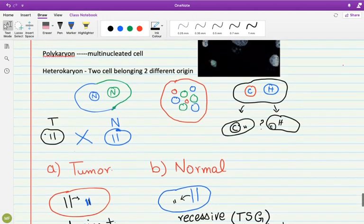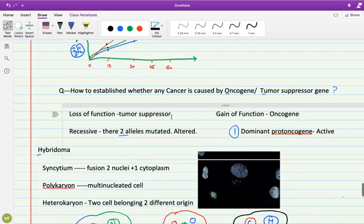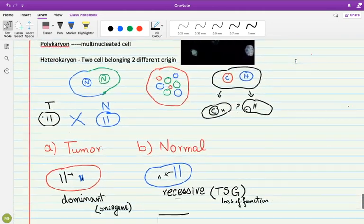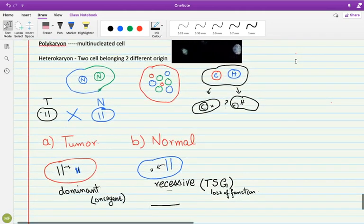Are you getting my point? This is how we can learn whether the cancer is caused by an oncogene or a tumor suppressor gene. That's a pretty straightforward thing. I hope you understand. In case you have any queries, please feel free to write. Thank you.